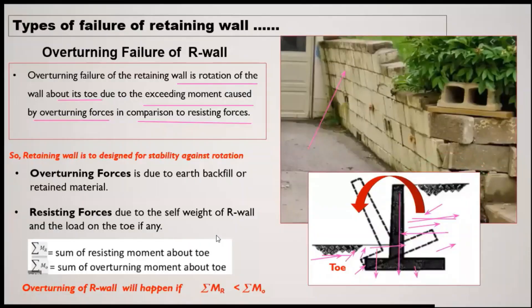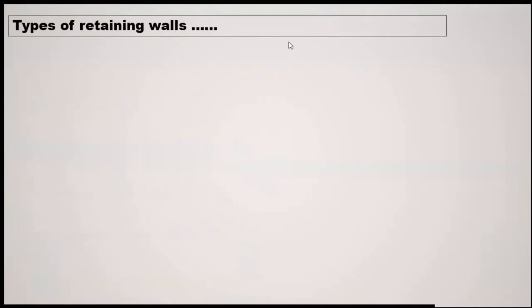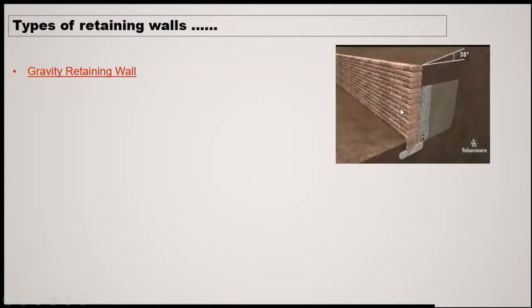When you are designing, you have to take care of sliding effects as well as rotation. Now let us discuss types of retaining walls. Today we will discuss one type and later we will discuss different types and then the design process. The simplest type is the gravity retaining wall. From the name, it is clear that the major effect is of gravity — that is, the weight of the retaining wall itself. Here, the wall has backfill on one side, with the toe side and heel side visible.